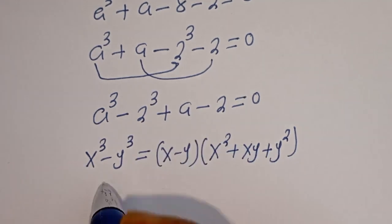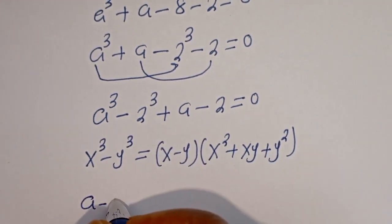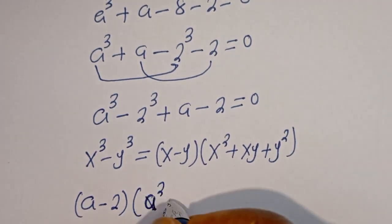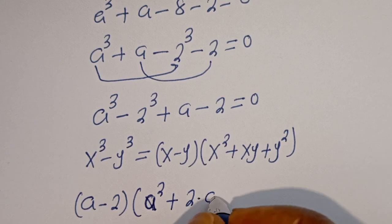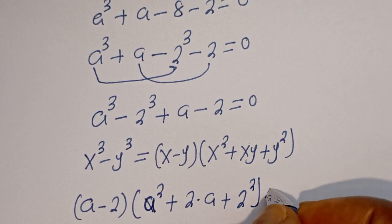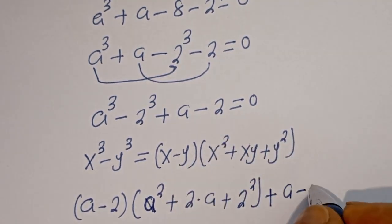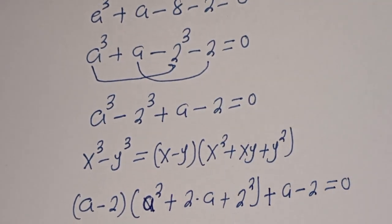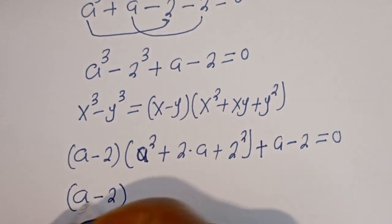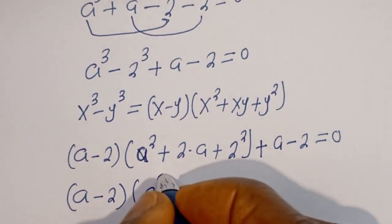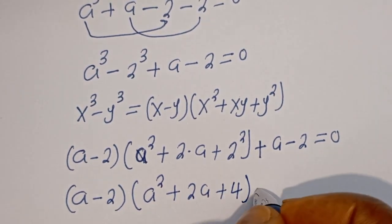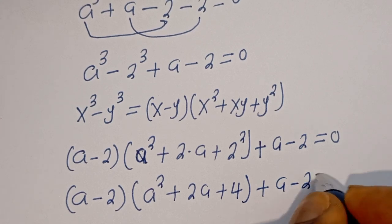Then this can be written as (A minus 2) bracket (A squared plus 2 multiplied by A plus 2 squared) plus (A minus 2) is equal to 0. Here we have (A minus 2) bracket (A squared plus 2A plus 4) plus (A minus 2) is equal to 0.